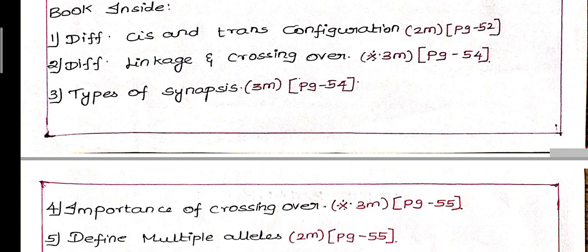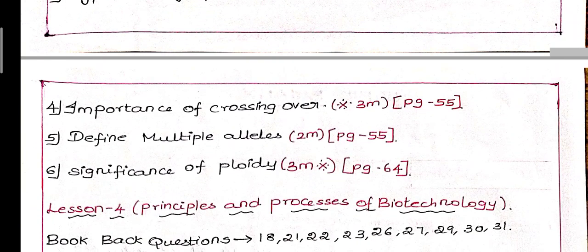Difference, page number 54, important 3 mark question. Next, third question: Types of synapses, page number 54. Procentric, pro-terminal, random synapses 3. You will get to see the mechanism of crossing over, page number 54, it's a 3 mark.